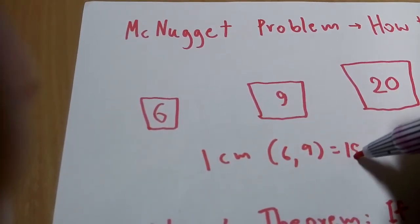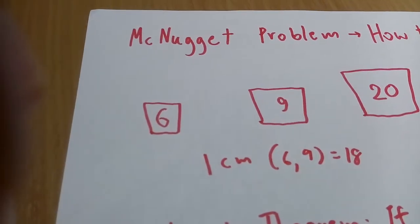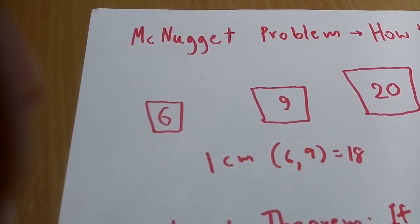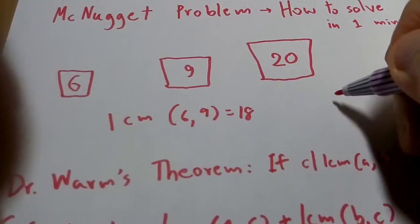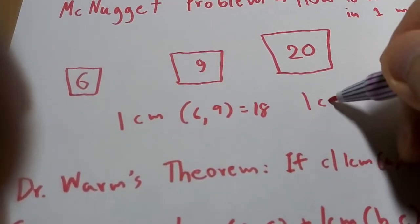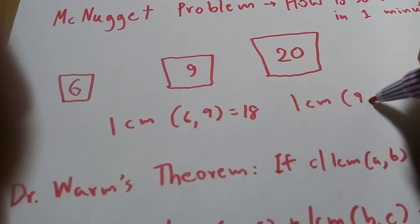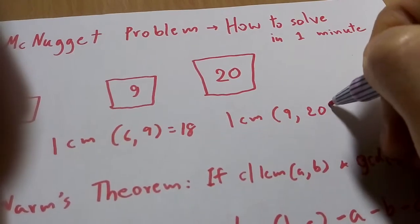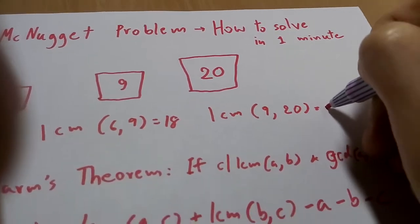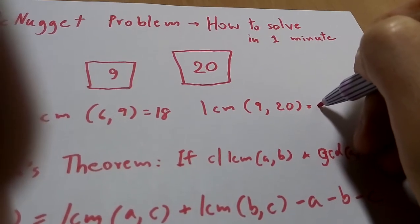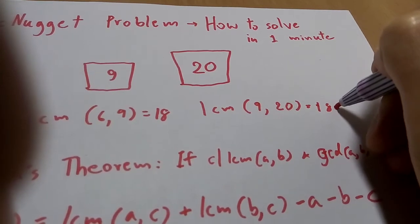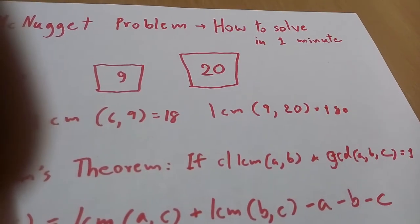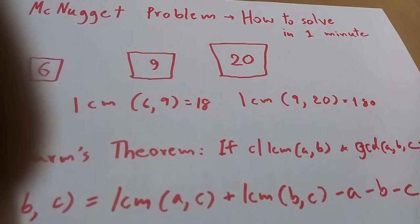Because 18 can be divided by nine or six. Let's just complete it then. The LCM for nine and 20 would be, well since they don't have any common factor, that would be 180.